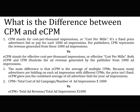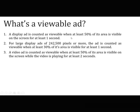Both eCPM and CPM illustrate the revenue generated by the publisher from a thousand ad impressions. The main difference is that CPM is a fixed rate while eCPM is the average of multiple CPMs, because many advertisers are bidding on each ad impression with different CPMs. eCPM gives you the combined average of all advertiser bids. CPM = total cost of ad campaign / number of ad impressions × 1000. eCPM = total ad revenue / total ad impressions × 1000.